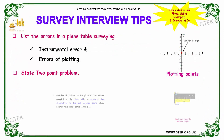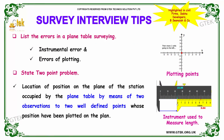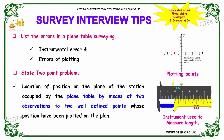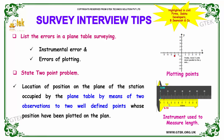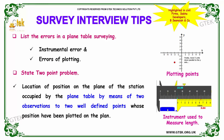Moving on to our next question: list the errors in plain table surveying. Some of the errors in plain table surveying are instrumental error and errors of plotting. These are the two main errors — they can occur either due to the instrument or due to human-made errors of plotting.